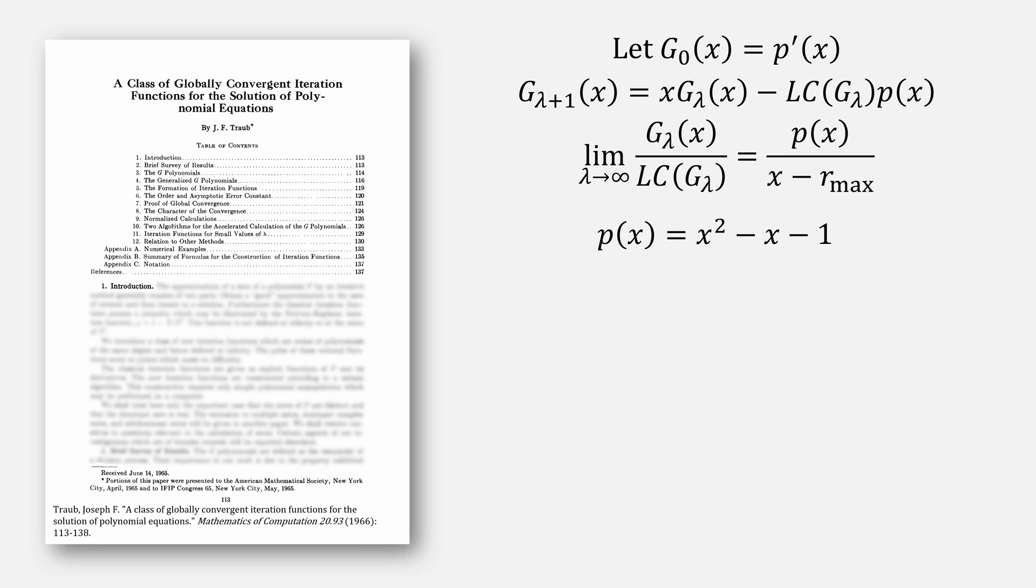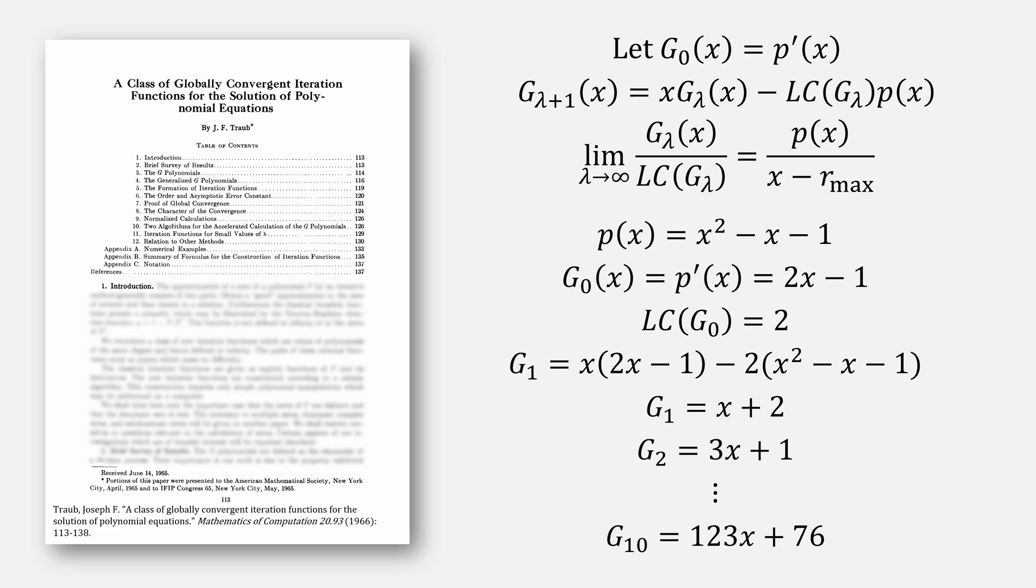Let's take an example of x squared minus x minus 1. Find g0, which is just 2x minus 1, its derivative, its leading coefficient is 2, and plug everything in to find our value for g1, which is simply just x plus 2. Repeat the same process to find g2 of 3x plus 1, and eventually, let's stop at g10 of 123x plus 76.